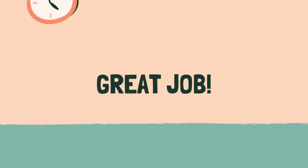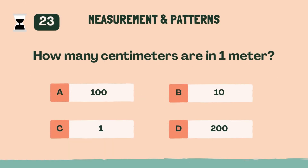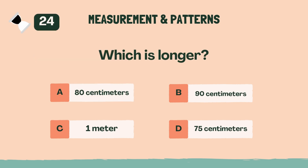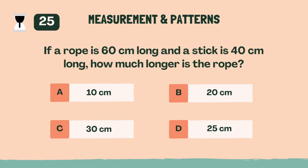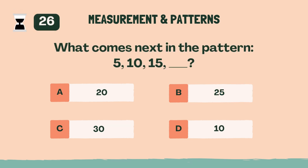Great job! Ready for some measurement and patterns. Category 4: Measurement and Patterns. 3, 2, 1, go. How many centimeters are in 1 meter? A, 100. Which is longer? C, 1 meter. If a rope is 60 centimeters long and a stick is 40 centimeters long, how much longer is the rope? B, 20 centimeters. What comes next in the pattern 5, 10, 15? A, 20.